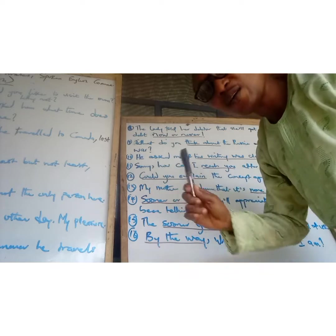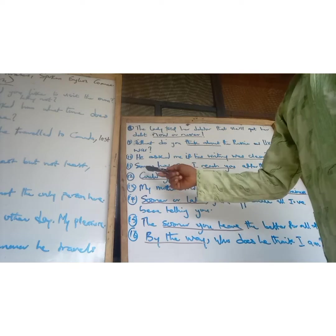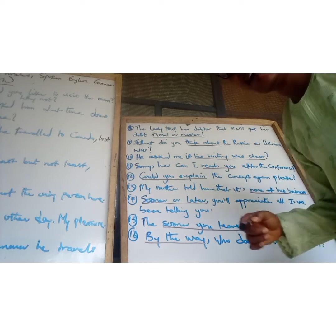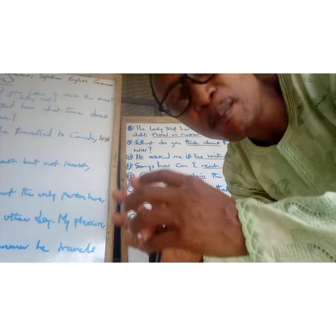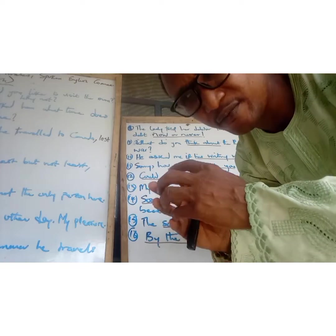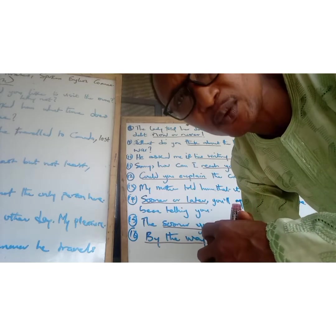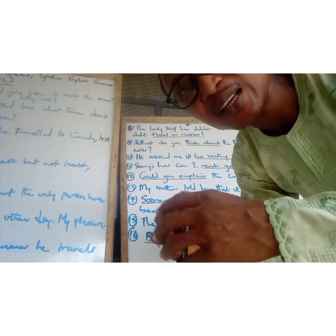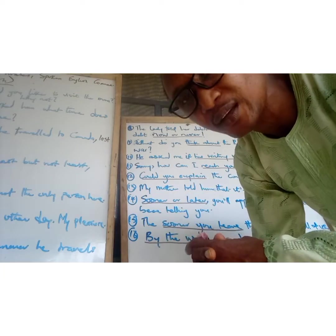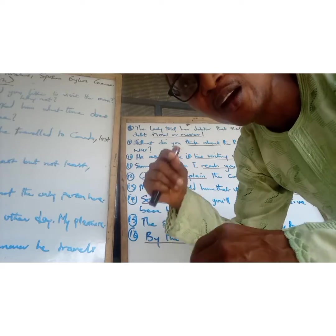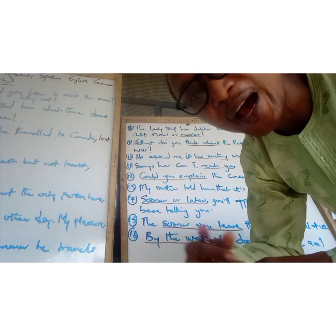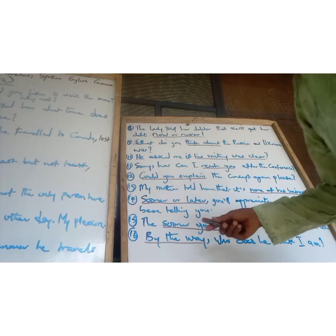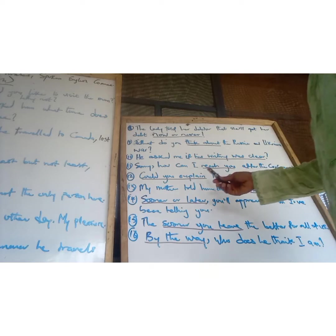The next one is 'reach you.' For example: 'How can I reach you after the conference?' I met a very intelligent individual at one of the conferences I attended, and I approached the scholar and asked: 'How can I reach you?'